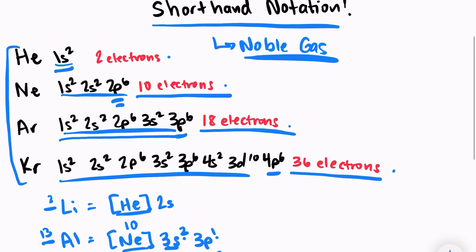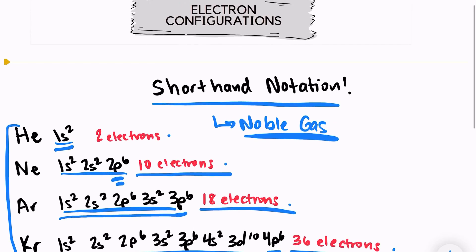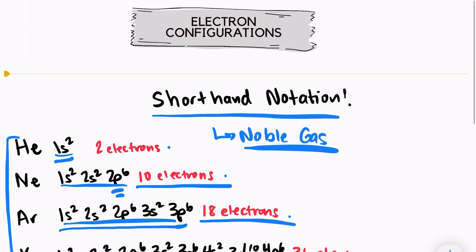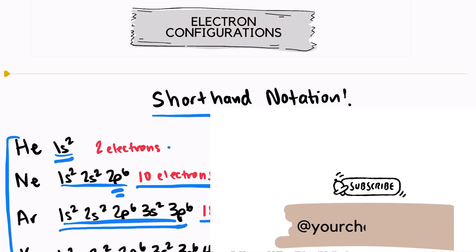I hope this was helpful in writing shorthand notation. It does save you a lot of time, so it's a good skill to know. If you have any other questions with electron configurations, make sure and check out my channel. Thank you so much for stopping by.